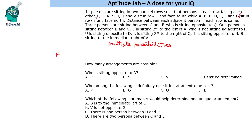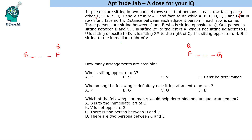Let's say this is F, and opposite to F is Q. Three people here, then G. In an alternate scenario, F is placed here with three people and G on the other side, and Q is opposite F. The second link: R is sitting second to the right of Q, so R is placed one, two positions to the right of Q. In the second scenario, R sits on the other side.